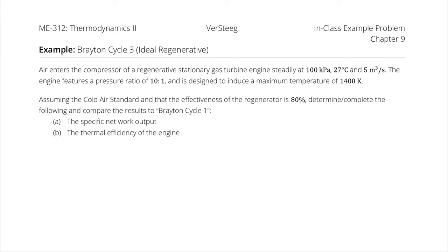Air enters the compressor of a regenerative stationary gas turbine engine steadily at 100 kPa, 27 degrees Celsius, and 5 cubic meters per second. The engine features a pressure ratio of 10 and is designed to induce a maximum temperature of 1400 Kelvin. Assuming the cold air standard and that the effectiveness of the regenerator is 80%, determine the specific net work output and thermal efficiency, and compare the results to Brayton cycle number 1.